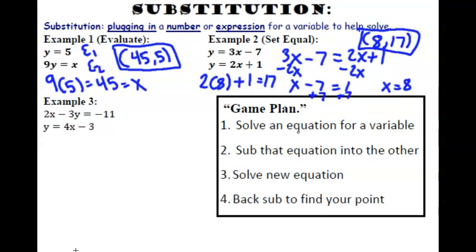We are using substitution to solve a system of equations. You will follow these steps: 1. Solve an equation for a variable. In both examples 1 and 2, the variable is already solved. 2. Substitute the equation into the other — wherever we see what we solved for, plug that into the second equation. 3. Solve the new equation. 4. Back substitute to find your point. For example 2, we found x equals 8, then plug 8 in wherever you see an x into the original equation to find y.